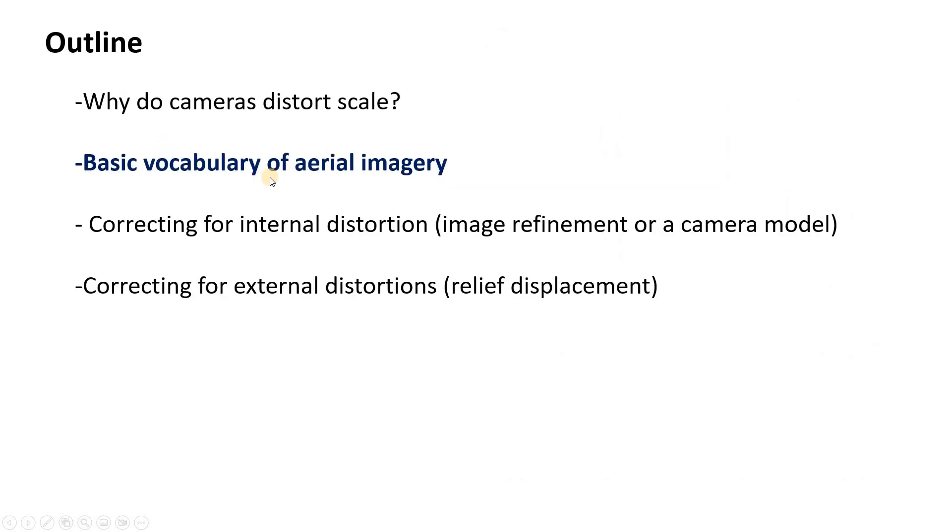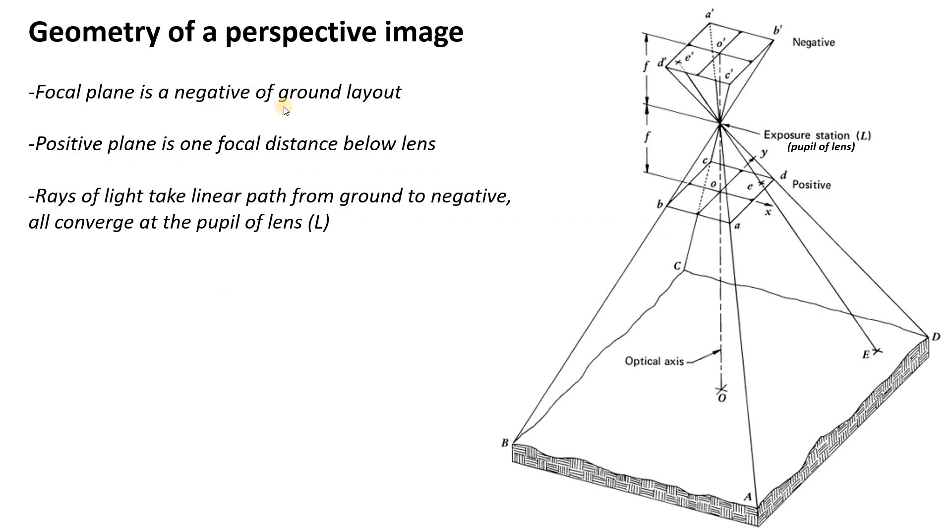Before we go any further we need to learn a little bit about the basic vocabulary of aerial imagery. We already got dangerously close to it in that last slide. So imagine that you have a camera sitting up in space pointed down to earth and that camera has a lens and it's right here and specifically this point will be called the pupil of the lens and we'll often refer to it as L.